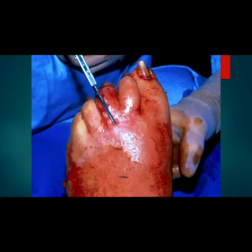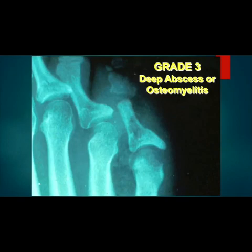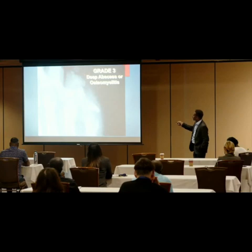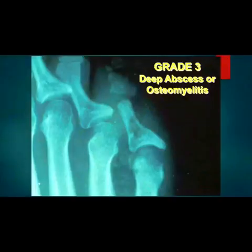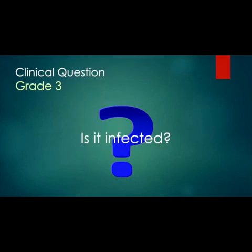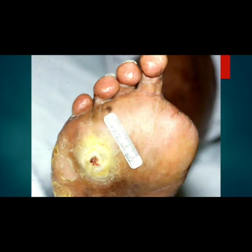Probing down to bone to attempt a bone culture helps determine osteomyelitis. Grade 3 is the infectious part — the infection has started to erode into the bone. You can see the moth-eaten sign into the shaft of the proximal phalanx on imaging. This is the infected, deeper stage of ulceration.